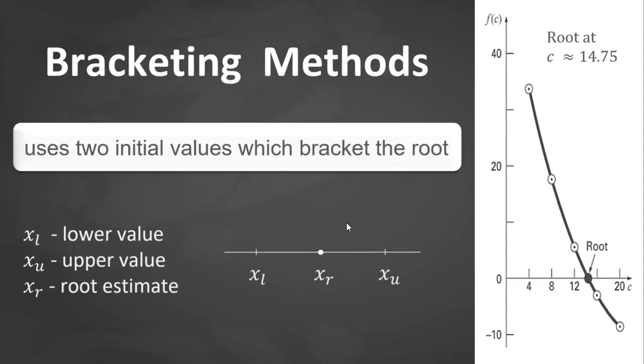The numerical methods which exploit this fact of the change of sign are called bracketing methods. As the name implies, these methods use two initial guesses for the root which must bracket or be on either side of the root.